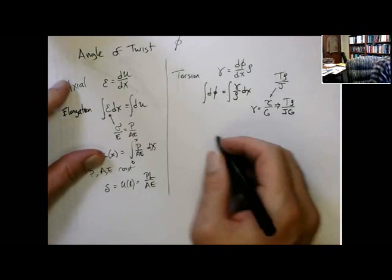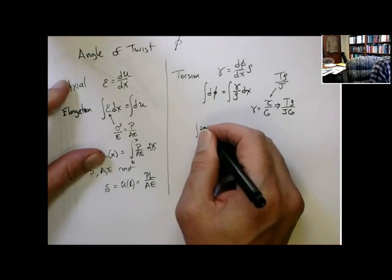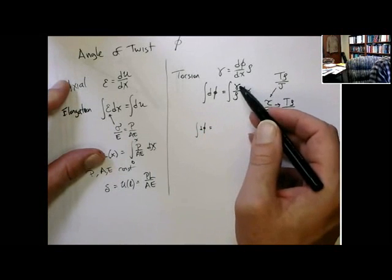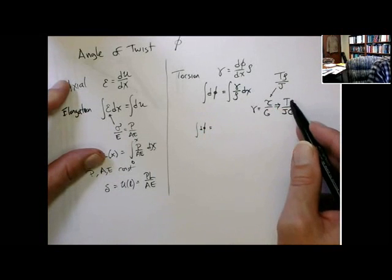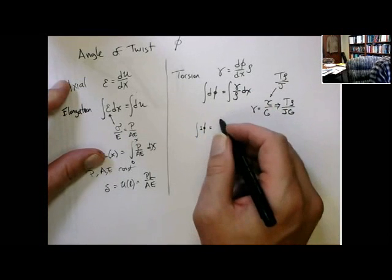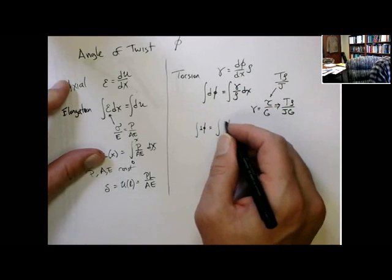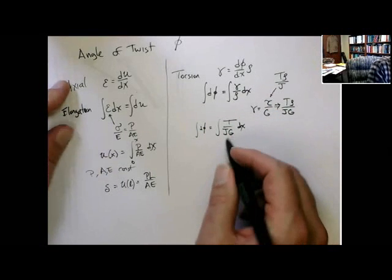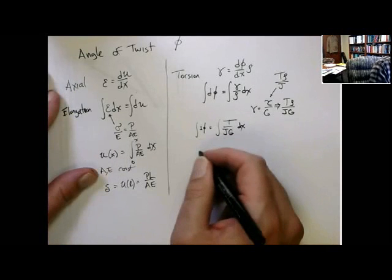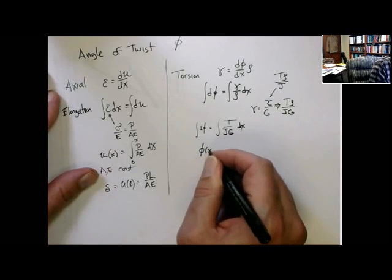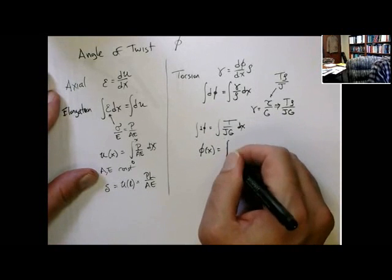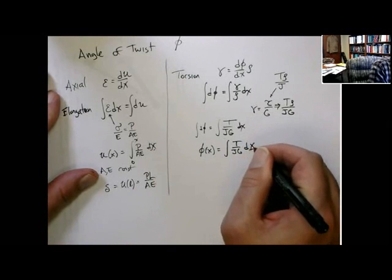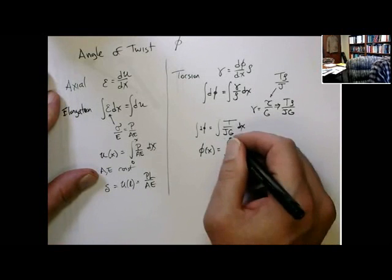So take that, put that in here. And I have the integral of φ is equal to putting in this, or the shear strain, you can see the rho's, the radial distance is being canceled out. And it gives me T over JG dx. So it's the integral of T of x over the integral of JG dx from 0 to x.